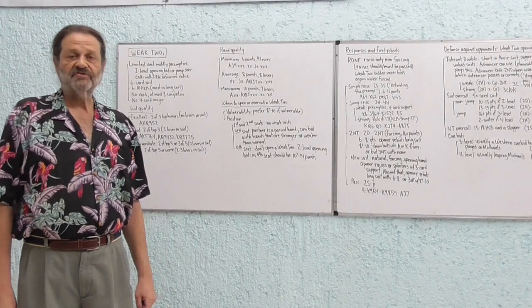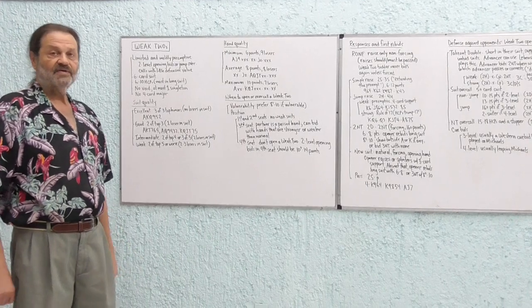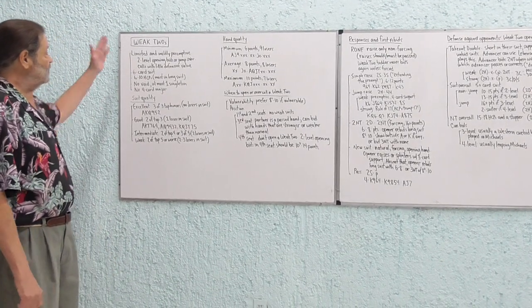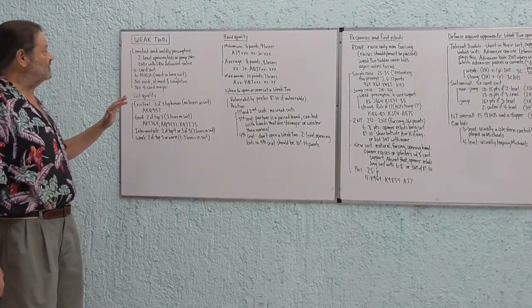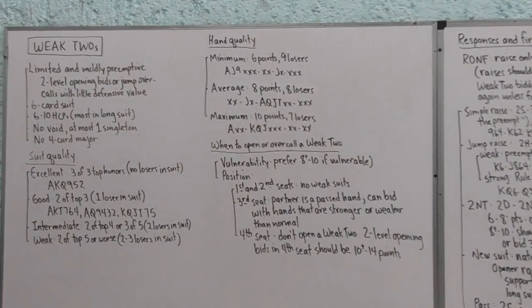This is Bridge with Stephen from the Lake Chapala Duplicate Bridge Club. Today we're going to tackle the topic of weak twos. Weak twos are limited and mildly preemptive two-level opening bids or jump overcalls that have little defensive value.